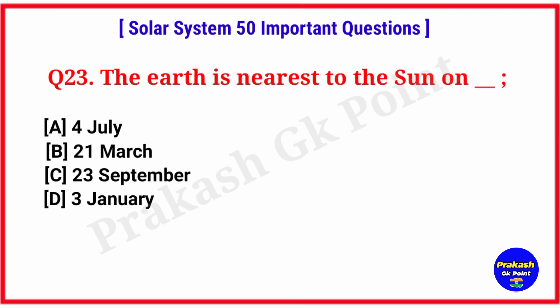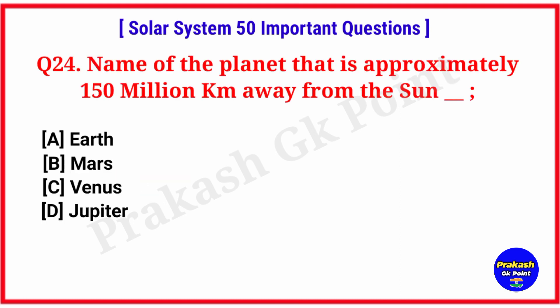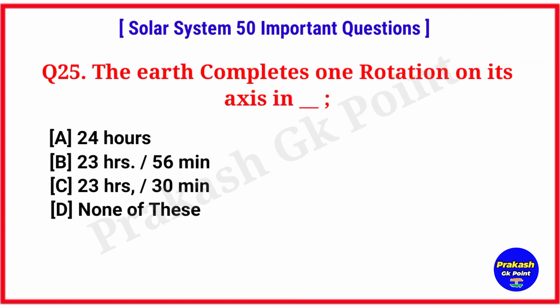The Earth is nearest to the sun on? Answer: option D, 3rd January. Name of the planet that is approximately 150,000,000 km away from the sun? Answer: option A, Earth. The Earth completes one rotation on its axis in? Answer: option B, 23 hours 56 minutes.